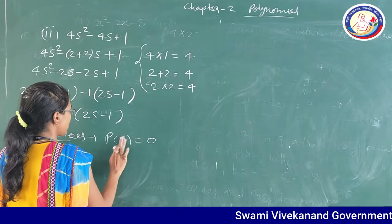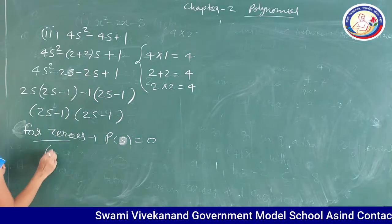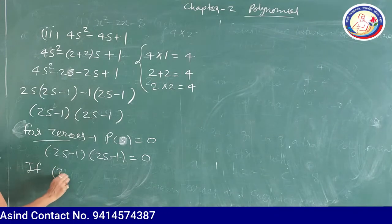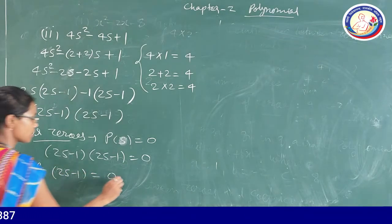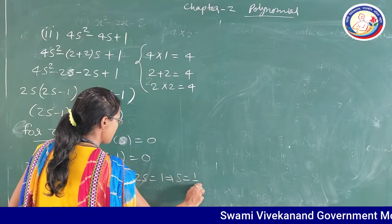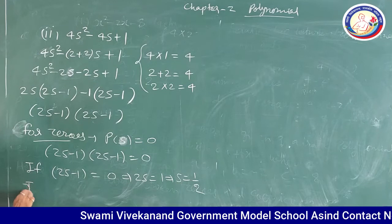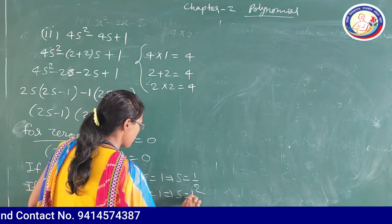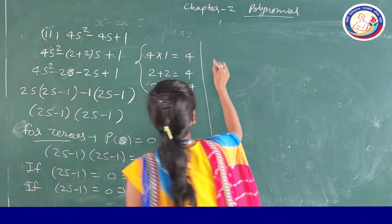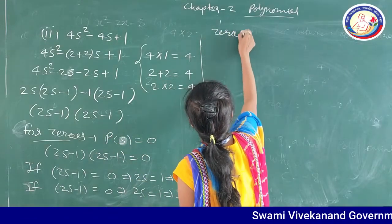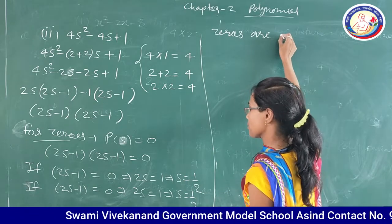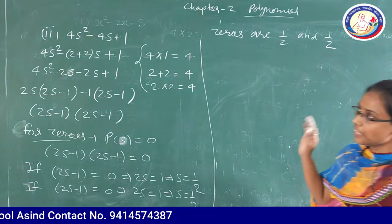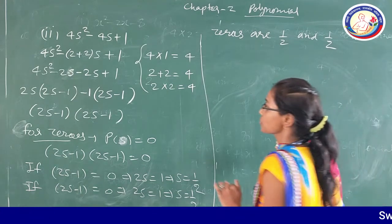To find zeros, set p(s) = 0. We have (2s minus 1)(2s minus 1) = 0. If 2s minus 1 = 0, then 2s = 1, so s = 1 by 2. Similarly, the second factor also gives s = 1 by 2. So the zeros are 1/2 and 1/2 — these are repeated zeros.